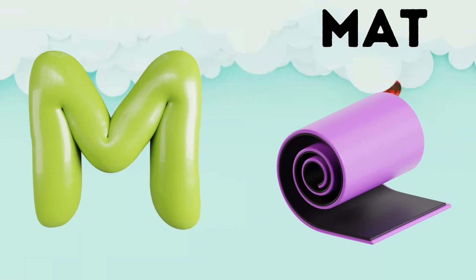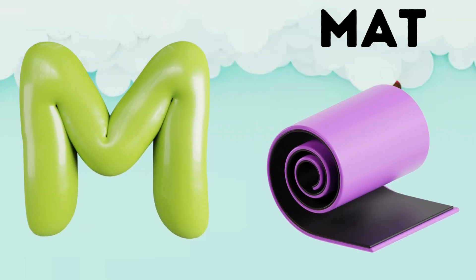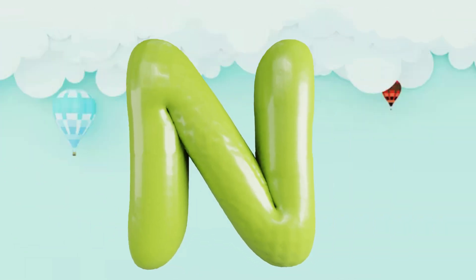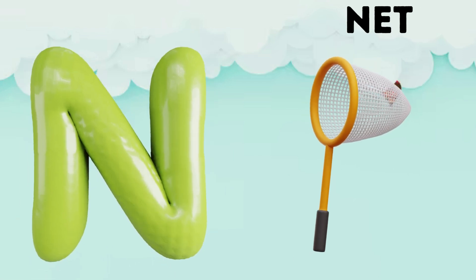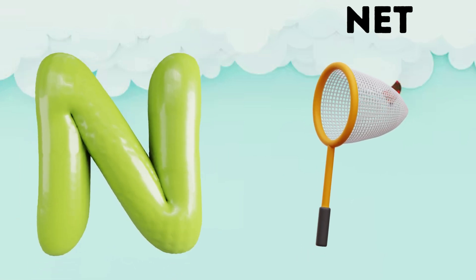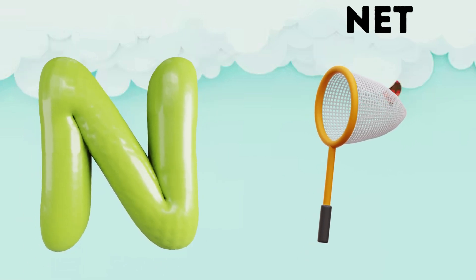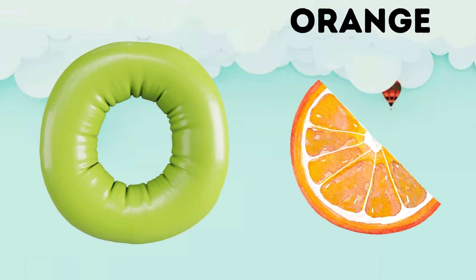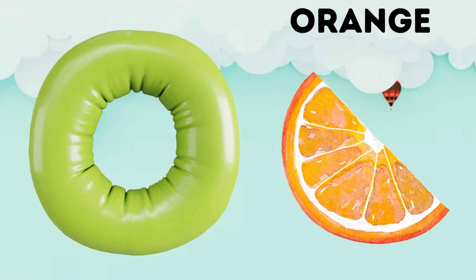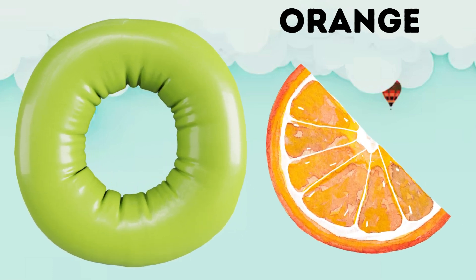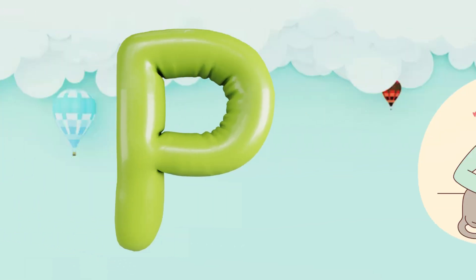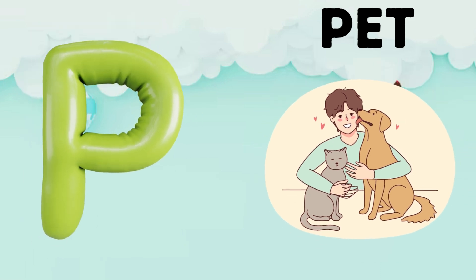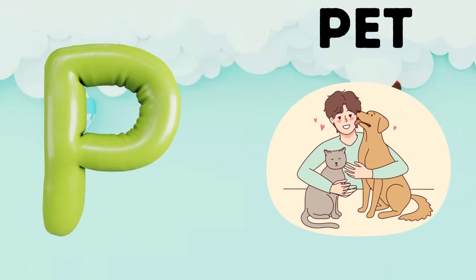M is for mat, m-m-mat. N is for net, n-n-net. O is for orange, o-o-orange. P is for pet, p-p-pet.